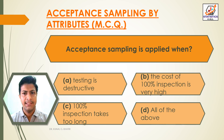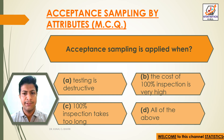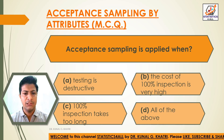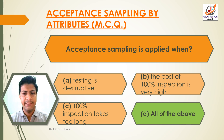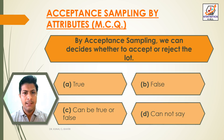Question 3: Acceptance sampling is applied when — Option A: testing is destructive. Option B: the cost of 100% inspection is very high. Option C: 100% inspection takes too long. Option D: All of the above. The answer is Option D — all of the above.